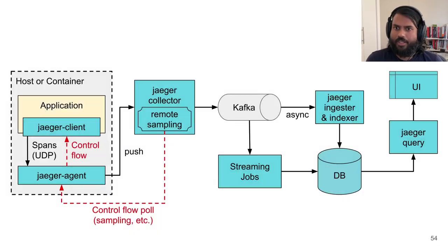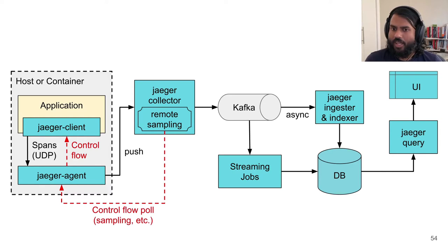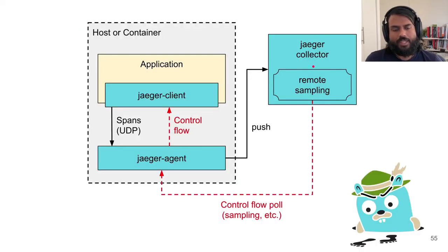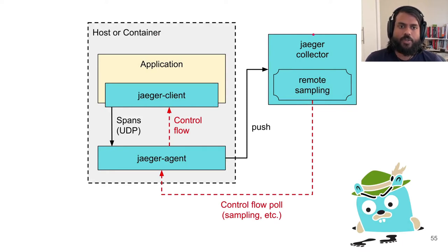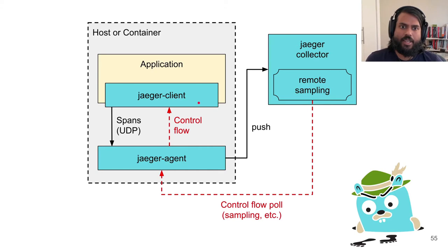Optionally, Jaeger may be deployed with a data mining platform which can generate dependency graphs of services. This architecture can be deployed in multiple different ways, which Joe is going to talk about shortly. One important thing to highlight is remote sampling — this allows the Jaeger collector to control the sampling rate, which is then read by Jaeger clients.